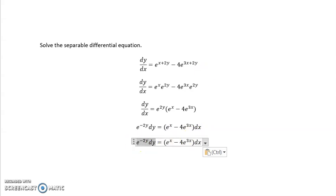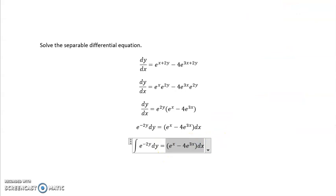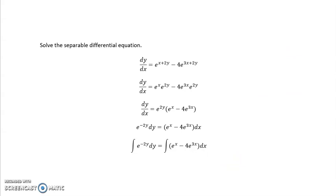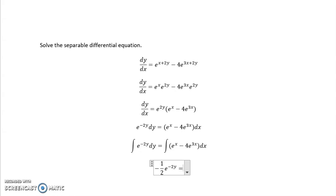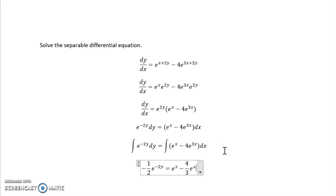We're going to apply an integration to the left side and an integration to the right side. Integrating e to the negative 2y gives negative one half e to the negative 2y. On the other side of the equation, the antiderivative of e to the x is e to the x, and 4 e to the 3x becomes 4 thirds e to the 3x, plus a constant of integration.